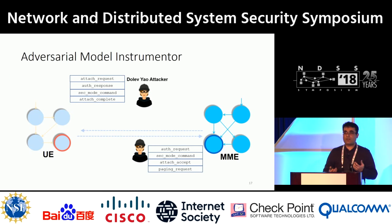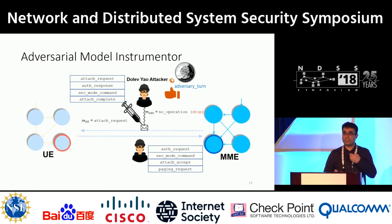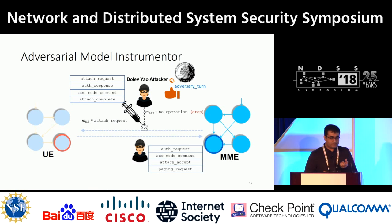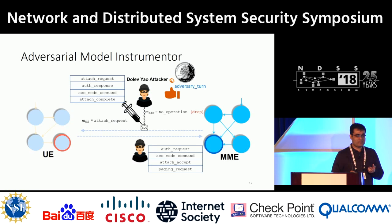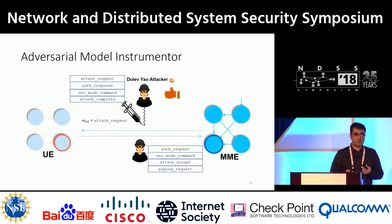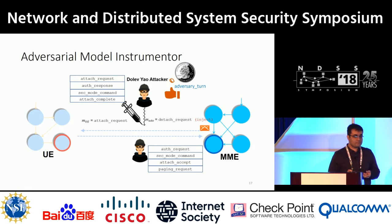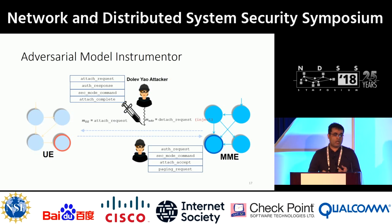Here is how our threat model instrumentation works. Whenever any benign participant wants to send a message, the adversary flips a coin. If it is heads, it is the adversarial turn, and it may non-deterministically choose actions for that message. If it wants to drop the message, it injects a no-operation. If it wants to modify or inject, it changes the message type or content. If it is a benign turn, the adversary lets the message pass through the communication channel.